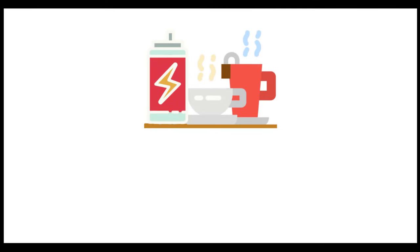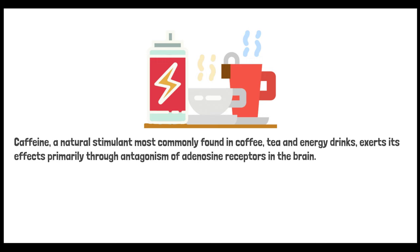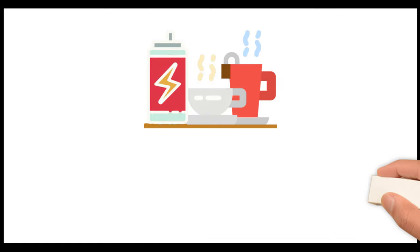Caffeine, a natural stimulant most commonly found in coffee, tea, and energy drinks, exerts its effects primarily through antagonism of adenosine receptors in the brain. To understand how caffeine works, it's helpful to first understand the role of adenosine.